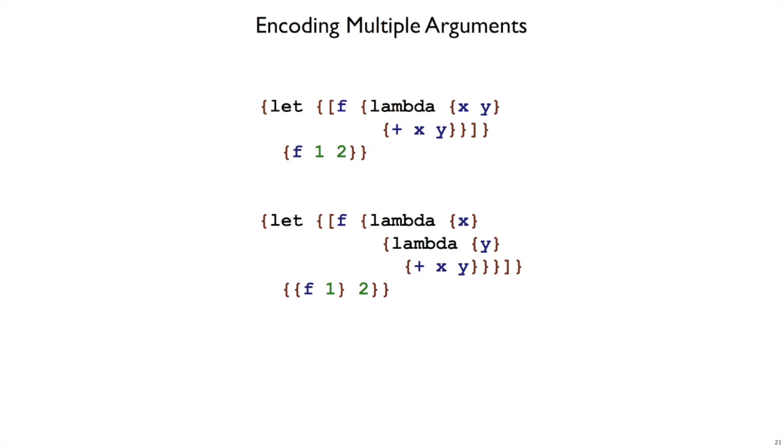Here's an example of an encoding we've touched on in the case of crates. Here is a lambda in a variant of Curly that has multiple arguments for functions, but that's not the variant we've implemented so far. What we have so far is a lambda that always has a single argument.